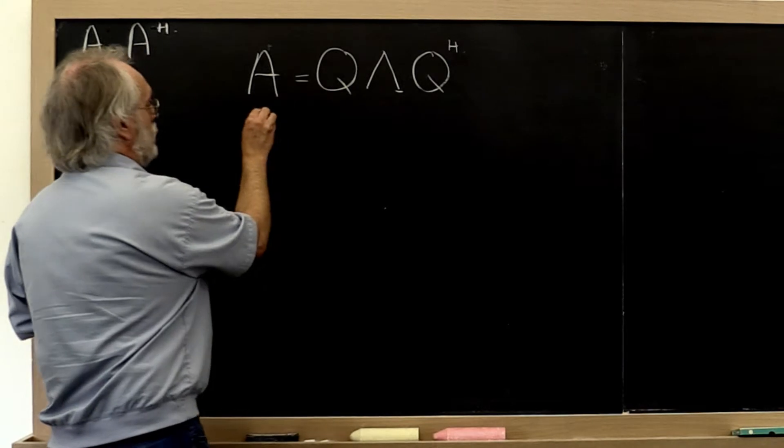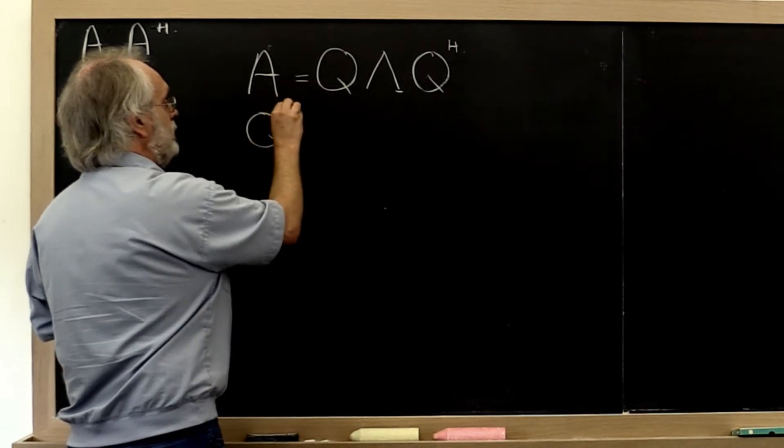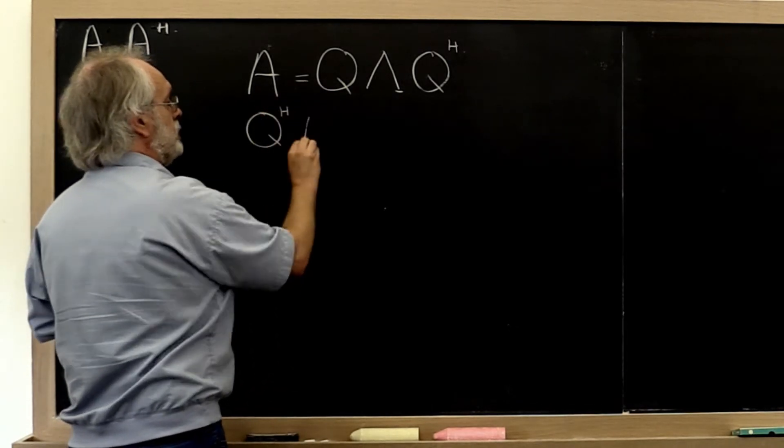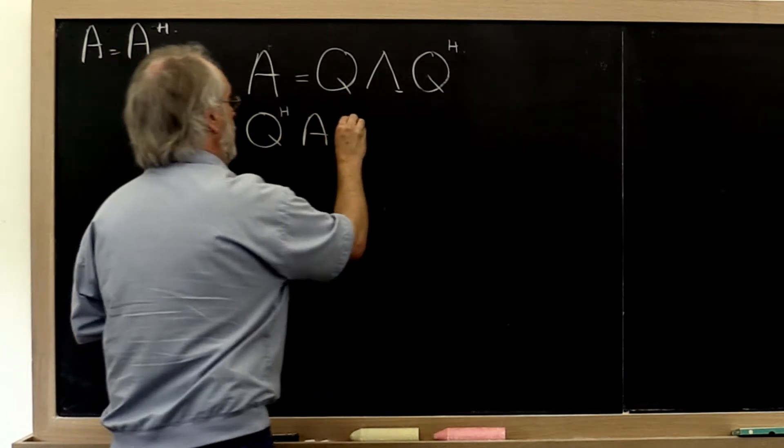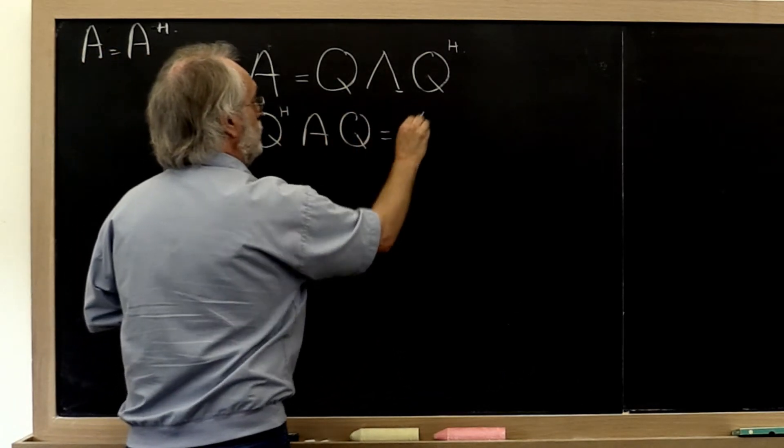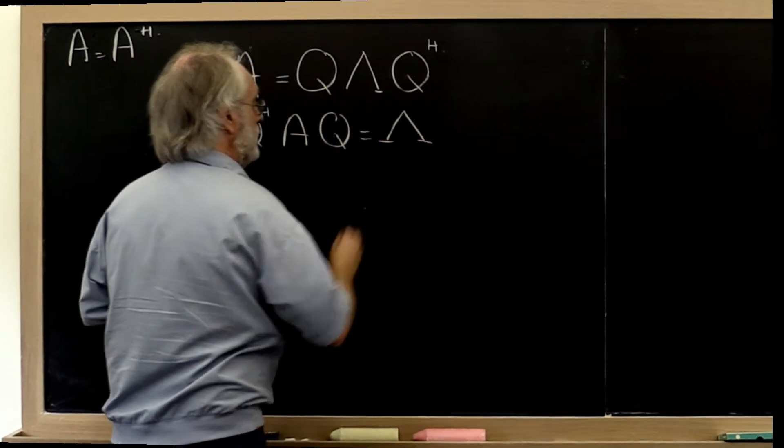What does that really mean? It means we were trying to find a unitary matrix Q such that Q Hermitian A Q equals a diagonal matrix.